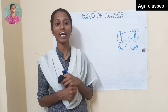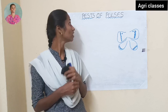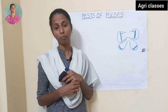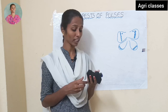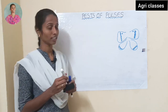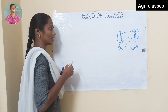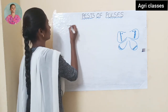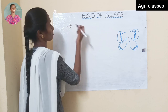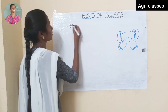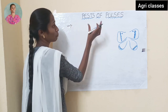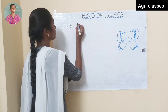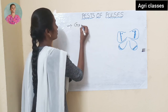My name is Shri Lekha and today I will deal with Pests of Pulses. First I will list out the pests, then I will tell about one of the pests. The main important pests of pulses are Gram Caterpillar, Red Gram Pod Fly, and Red Gram Plume Moth. These three are the most important pests of pulses.